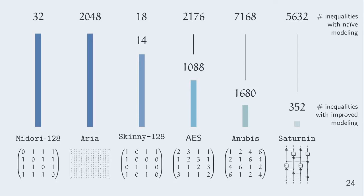For Aria and Midori, maximal branch number matrices were chosen, so we cannot do anything with our techniques. We just saw a slight improvement for Skinny. AES and Anubis matrices can have better modelings with compensating with the S-boxes. And finally, for Saturnin, our technique can significantly improve the modeling.